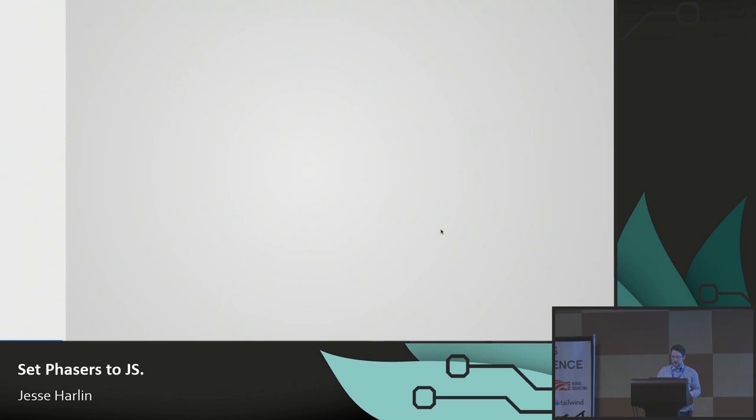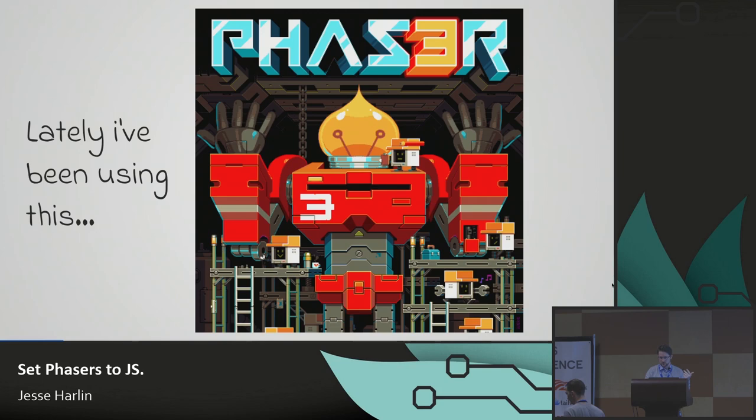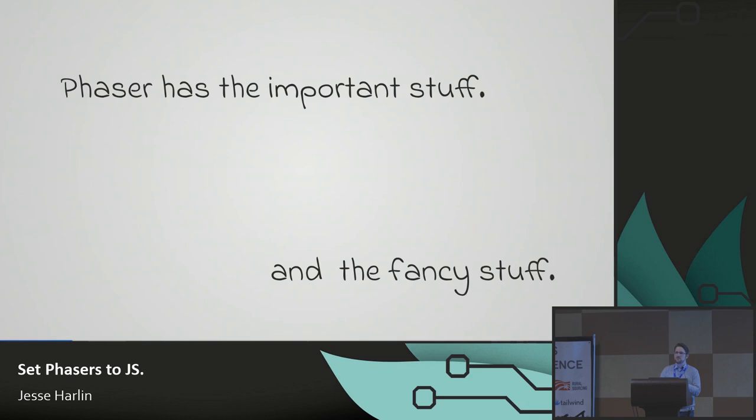I've been using Phaser 3 because it really has the important stuff. If you look at the anatomy of a game engine, there are things you should expect to be there — a game loop, a way to manage animations. It's like saying a car must have an engine and wheels, and really should have seat belts and probably a radio. Phaser checks all those boxes.